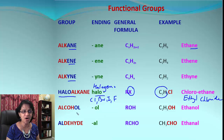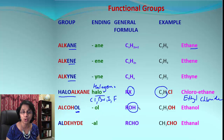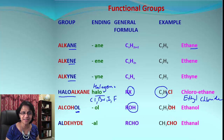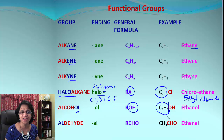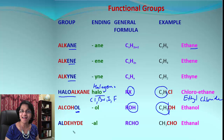Alcohols all end in '-ol.' The functional group is OH, which is hydroxide. You can clearly see OH is the functional group, and C₂H₅ corresponds to ethane, so it will be ethanol.